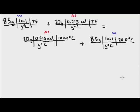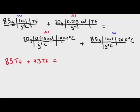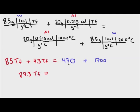Now I'll multiply through. I'll have 85 times Tf, and 20 times 0.215 gives 4.3 Tf. So the left side is 85 Tf plus 4.3 Tf. On the right side, 4.3 times 100 gives 430, and 85 times 1 times 20 gives 1,700. Adding together: 85 plus 4.3 is 89.3, so we have 89.3 times Tf equals 430 plus 1,700, which equals 2,130.